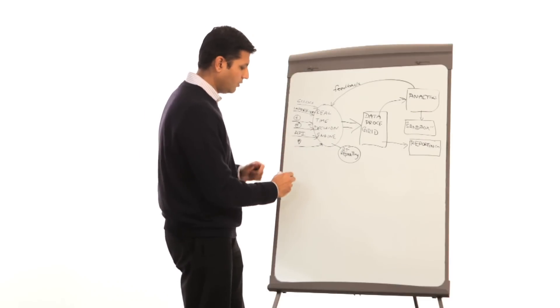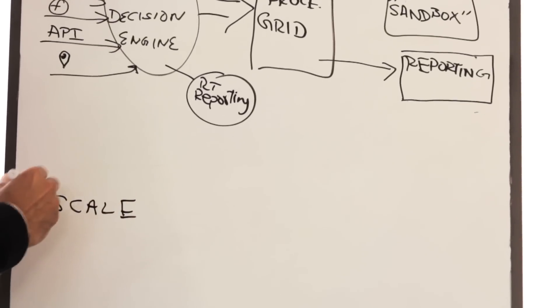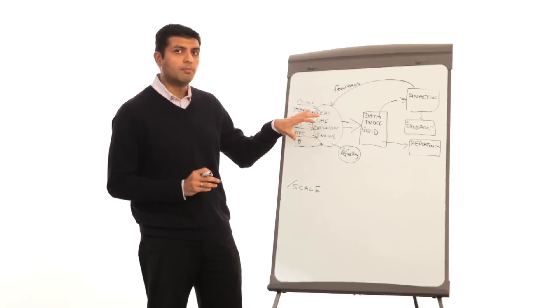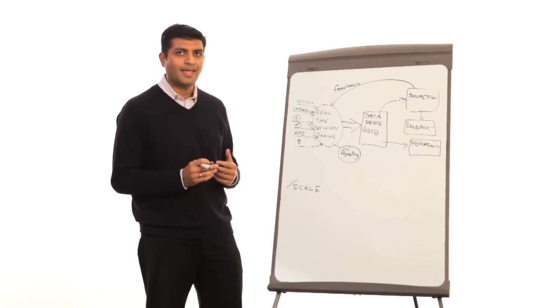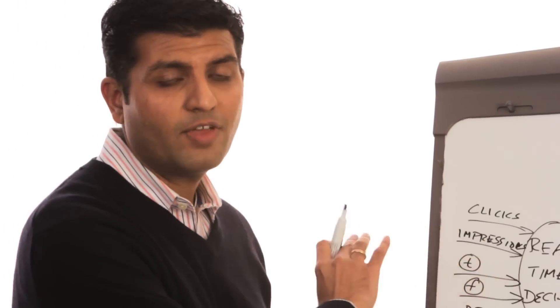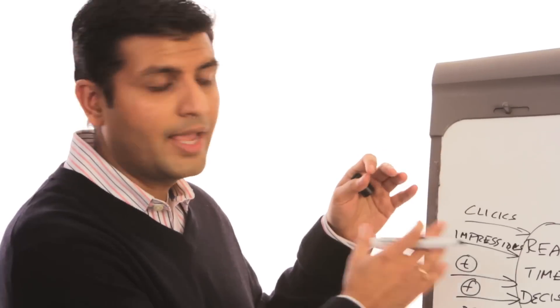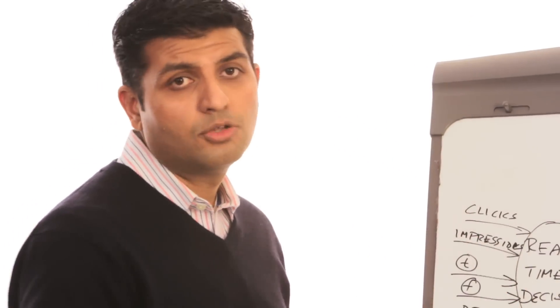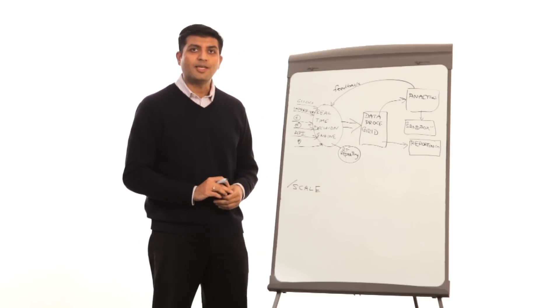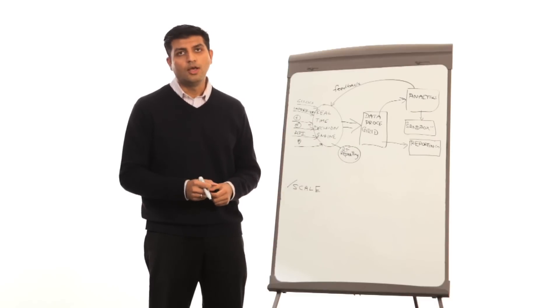The first and foremost thing is scale. How does this particular architecture scale with different parameters? The interesting thing is each of these components actually scale differently, and they have different parameters that drive scale. The real-time decision engine scales based on the number of events that are hitting. So the more machine-generated events or the more humans that are interacting with it causes it to have to scale. The data processing grid, on the other hand, scales based on volume of data and also the frequency at which it needs to process that data.